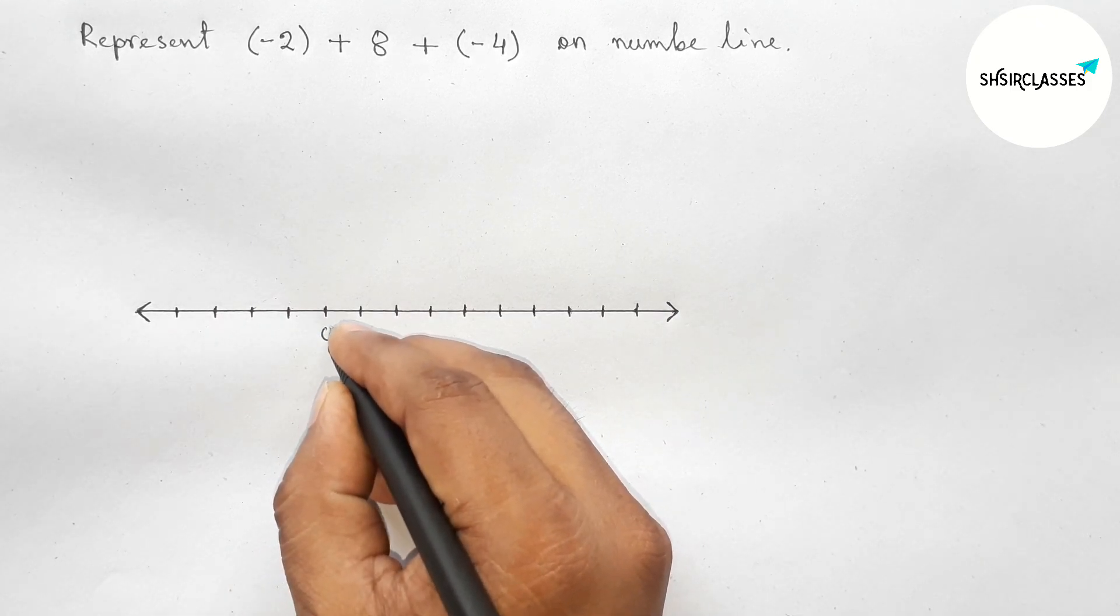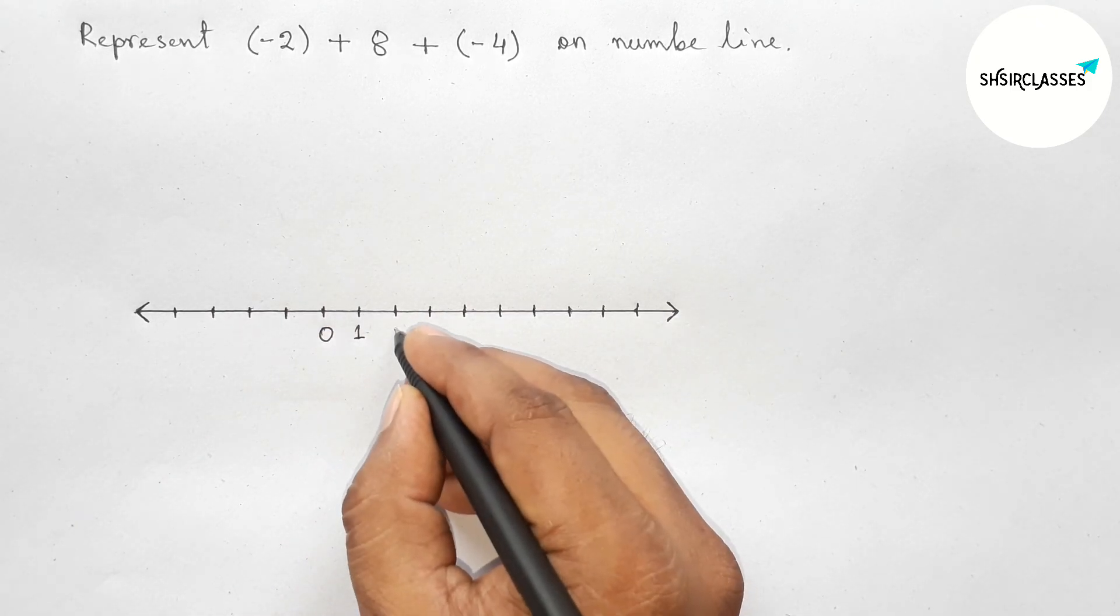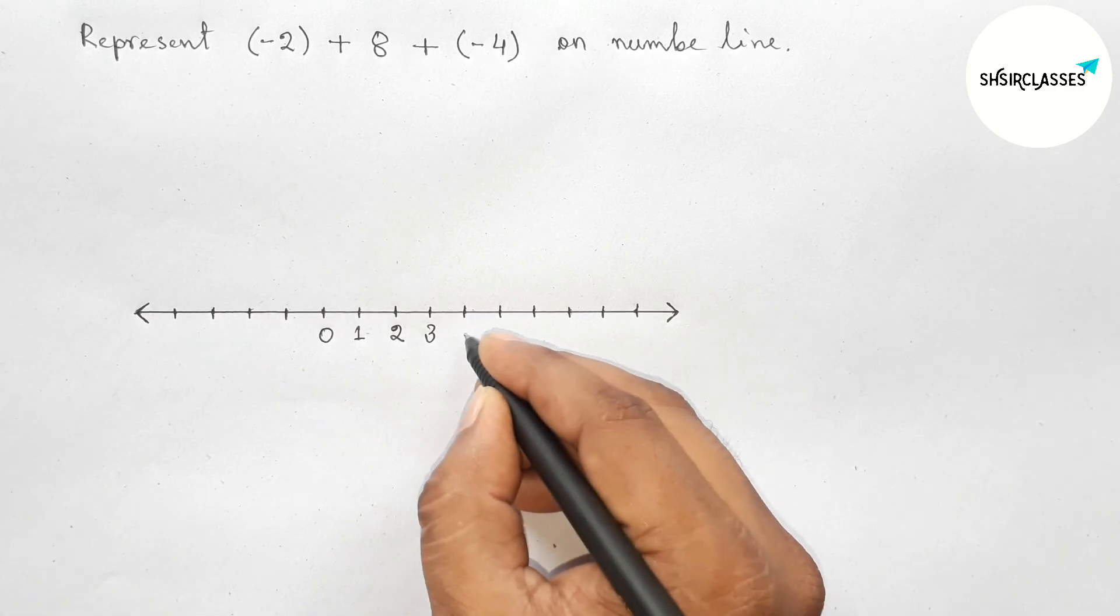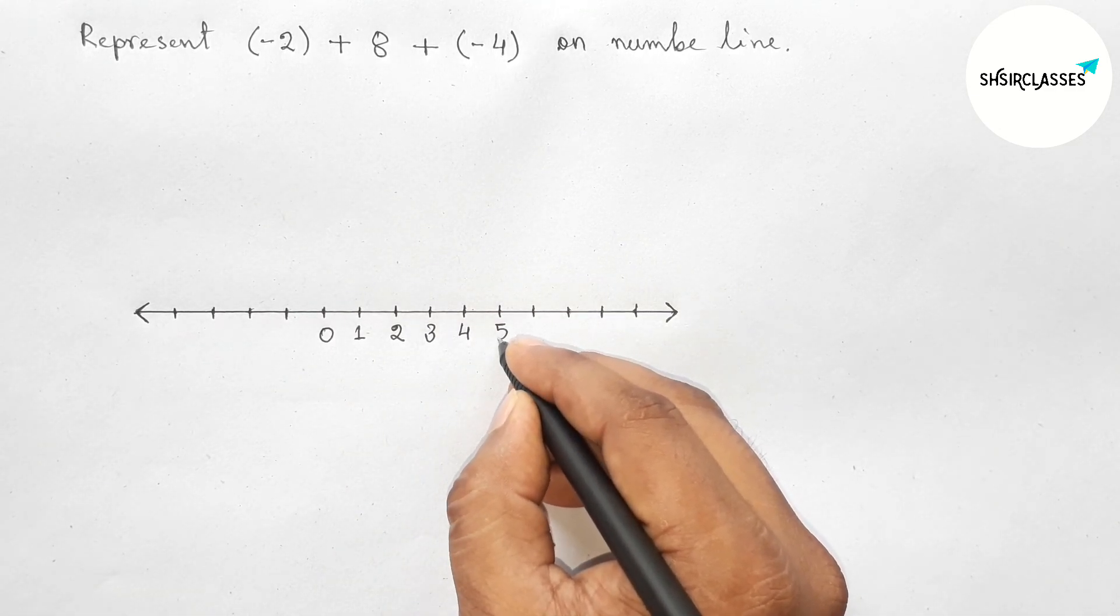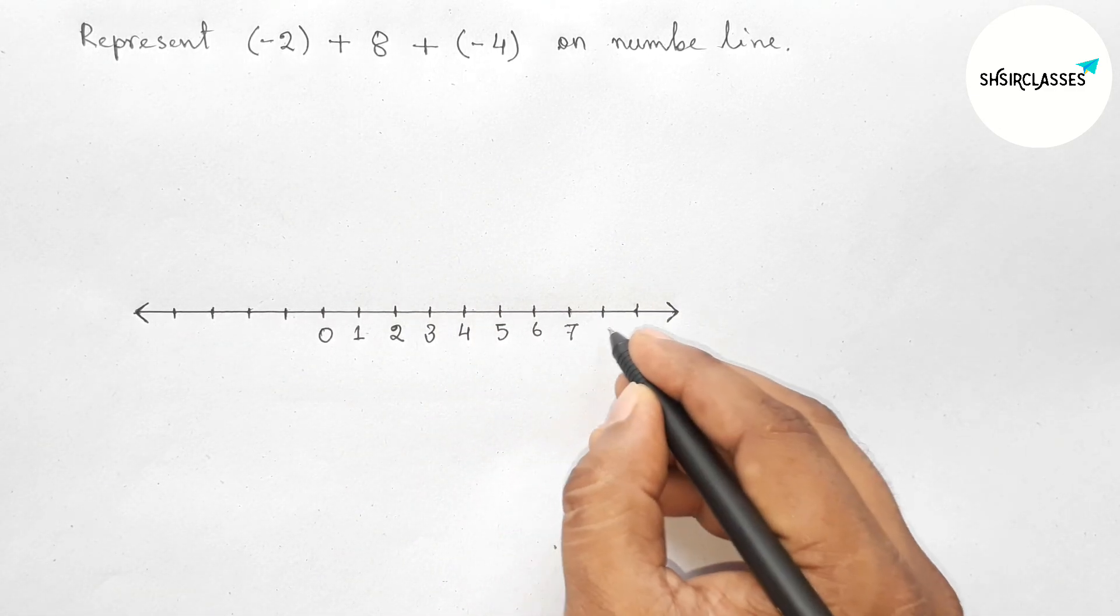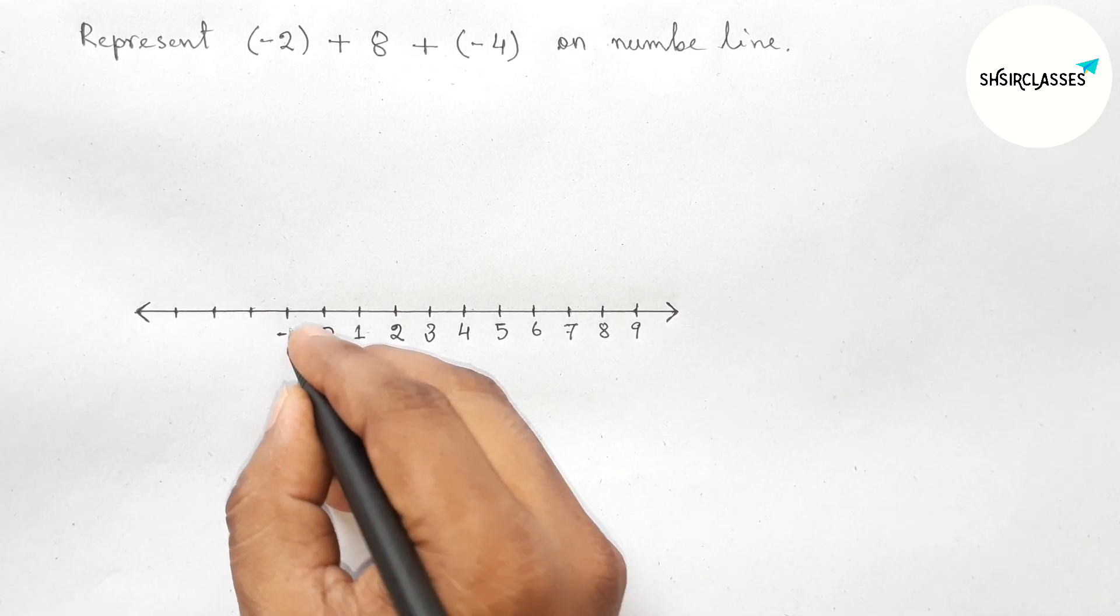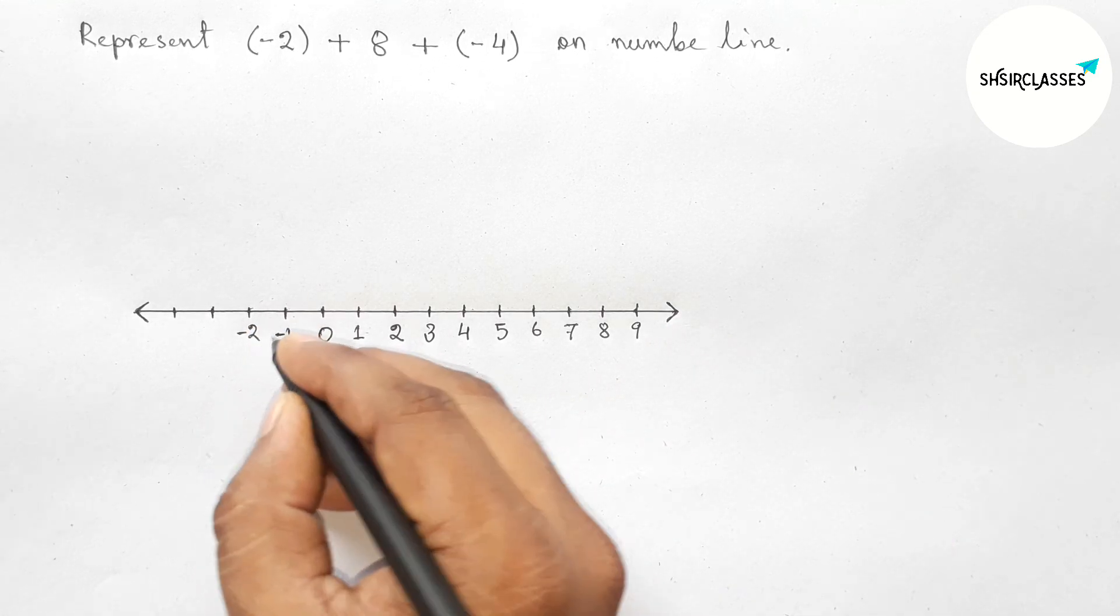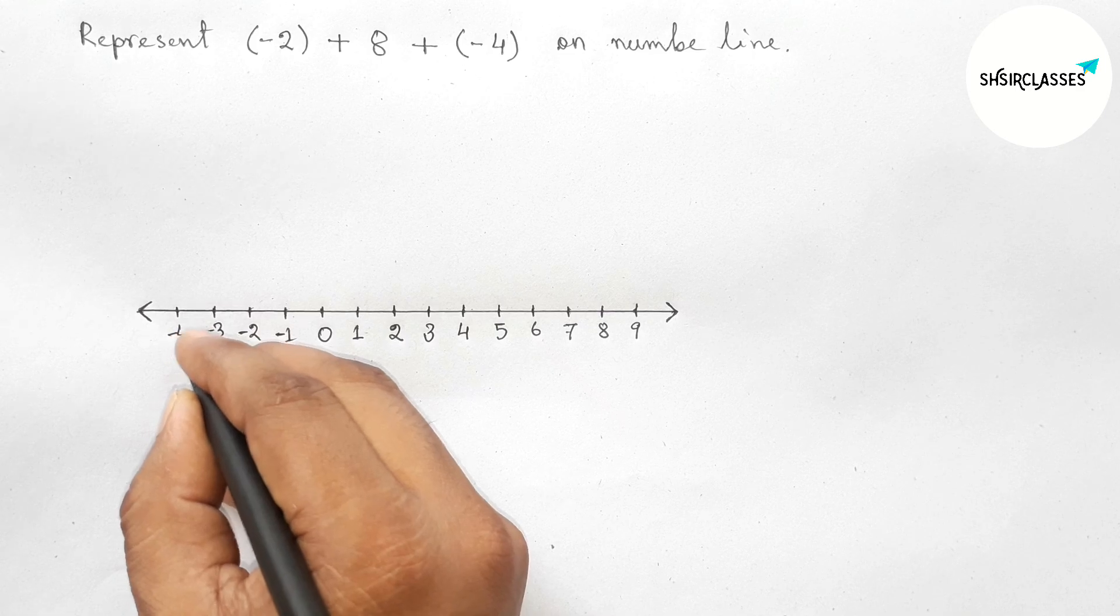Now taking here 0. So from 0 to the right side, write down here all the positive numbers: 1, 2, 3, 4, 5, 6, 7, 8, 9, and continuous.